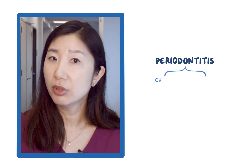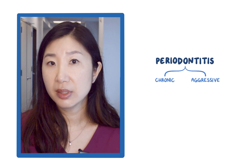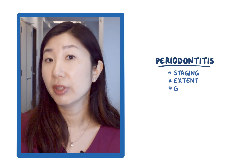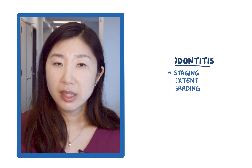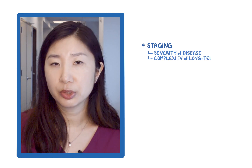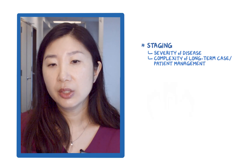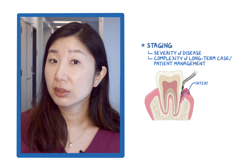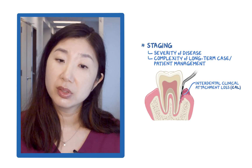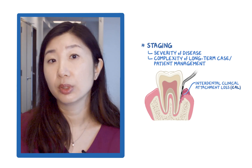Next is periodontitis. In the older classification, periodontitis was categorized as chronic or aggressive, but now they are grouped in a single category of periodontitis. Periodontitis is then further classified by staging, extent, and grading system. Staging is based on the severity of disease and the complexity of long-term case or patient management. Stage should be determined using the interdental or interproximal clinical attachment loss initially, with other factors considered to move to higher or lower staging.